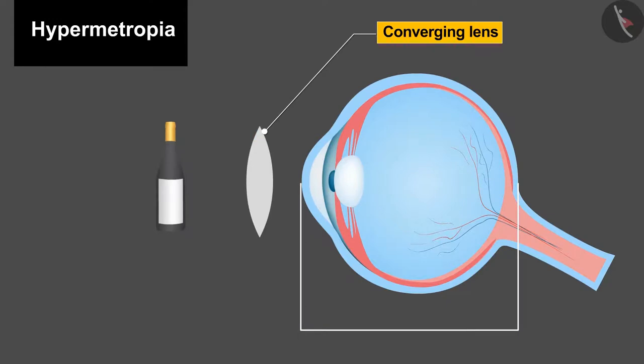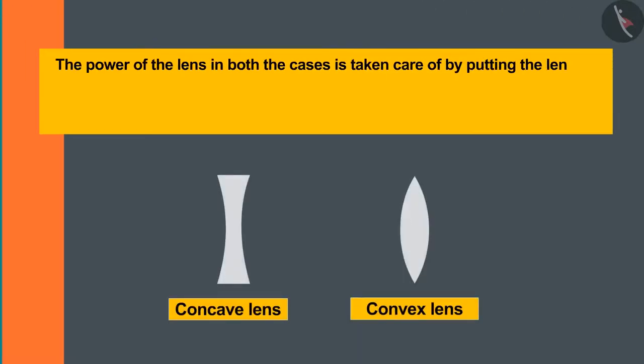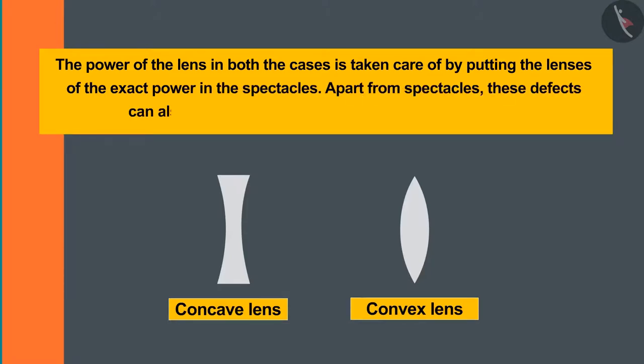The power of the lens in both cases is taken care of by putting lenses of the exact power in the spectacles. Apart from spectacles, these defects can also be overcome through various types of surgery.